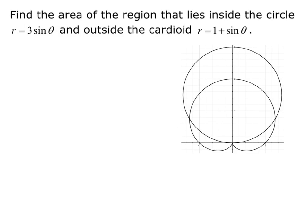When we graph the circle r equals 3 sine theta, we see that it's a circle with diameter 3, sitting on top of the x-axis and symmetric over the y-axis. The cardioid r equals 1 plus sine theta is also symmetric over the y-axis, and it makes basically an upside-down rounded heart shape.